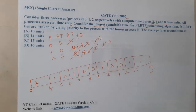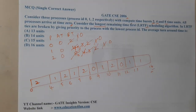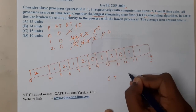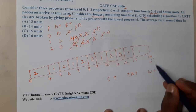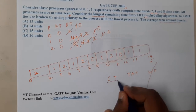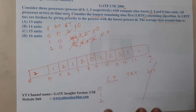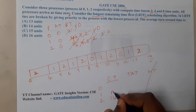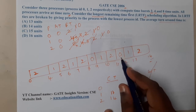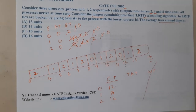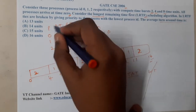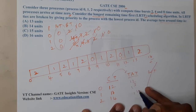At the end of the 14th millisecond, we are able to complete all processes. Process 2 completed at 14 milliseconds, process 1 completed at 13 milliseconds, and process 0 completed at 12 milliseconds. Turnaround time is completion time minus arrival time. Since everyone arrived at 0, the turnaround times are exactly 12, 13, and 14.